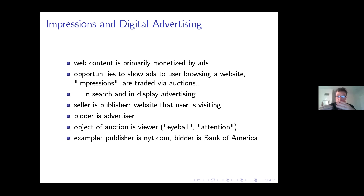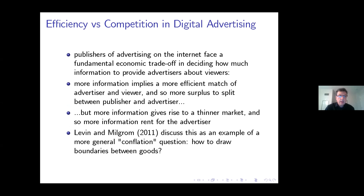We are in a situation where the seller is a publisher offering auctions for the advertisers — think about the publisher being the New York Times, and one possible advertiser being the Bank of America who would like to display its financial services. The publisher on the internet faces a fundamental trade-off in deciding how much information to provide the advertisers about the viewers. The publisher has quite a bit of information in terms of browsing history, characteristics, and other elements about the viewer. The more he conveys to the advertisers about the segment, the better the match between advertiser and viewer, and possibly more surplus to be split. But the more information you provide, the thinner becomes the market, and the information rent for the advertiser is rising.